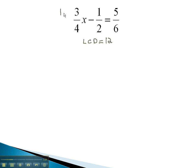So we will multiply each term by 12. As we do, those 12s will reduce with each of those denominators. 12 over 4 reduces to 3. 12 over 2 reduces to 6. And 12 over 6 reduces to 2.